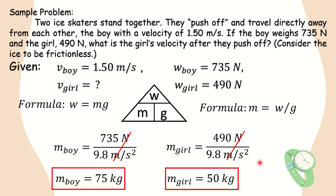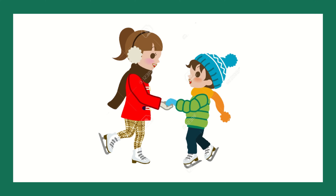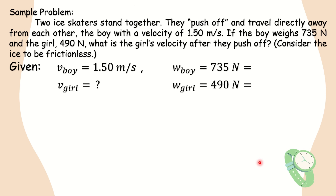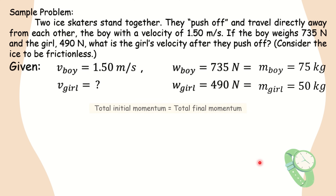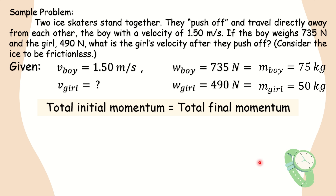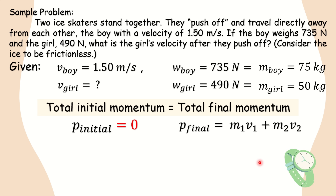Now that we have their masses, we can proceed to solve the problem. The ice is frictionless, so no external force is present, and the momentum of the boy and girl's system is conserved. There is no change in momentum before and after the push-off. The given values are: mass of boy = 75 kg, mass of girl = 50 kg, and velocity of boy = 1.50 m/s. Remember that total initial momentum equals total final momentum. Initial momentum is zero because they started at rest, so the total final momentum must also be zero.